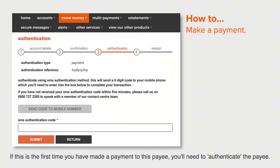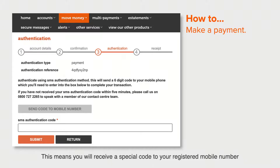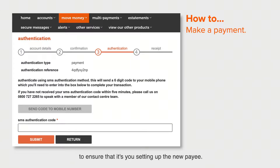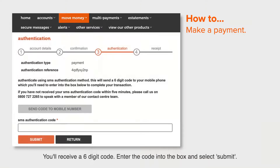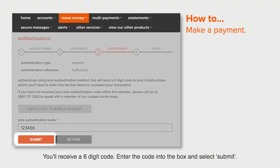If this is the first time you've made a payment to this payee, you'll need to authenticate the payee. This means you'll receive a special code to your registered mobile number to ensure that it's you setting up the new payee. Click Send Code to Mobile Number. You'll receive a six digit code — enter the code into the box and select Submit.